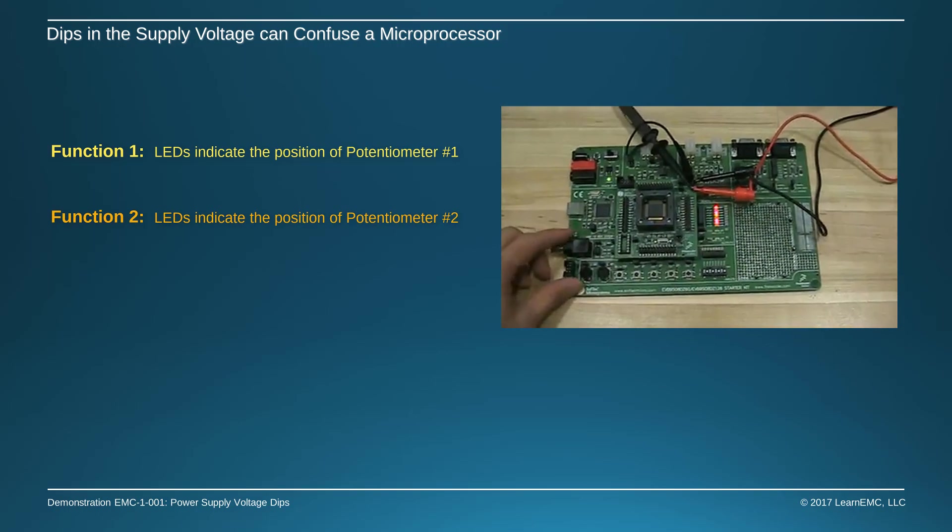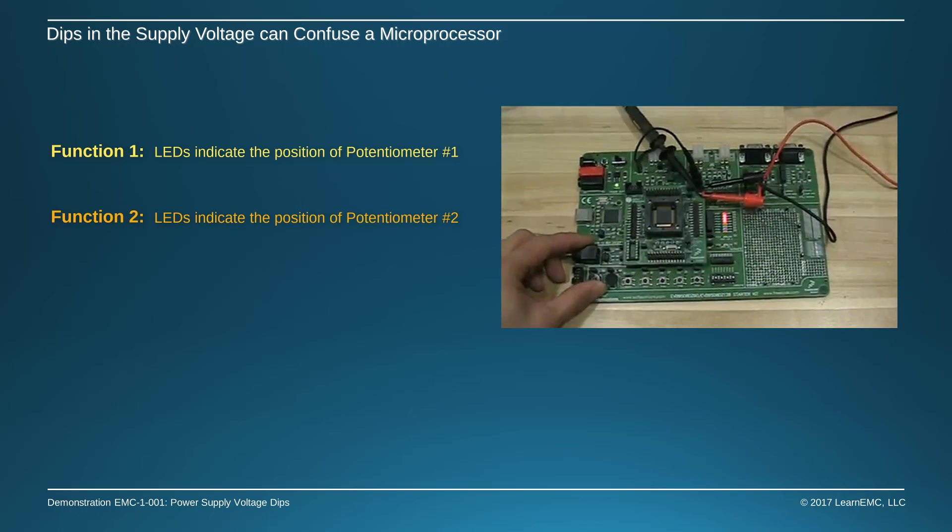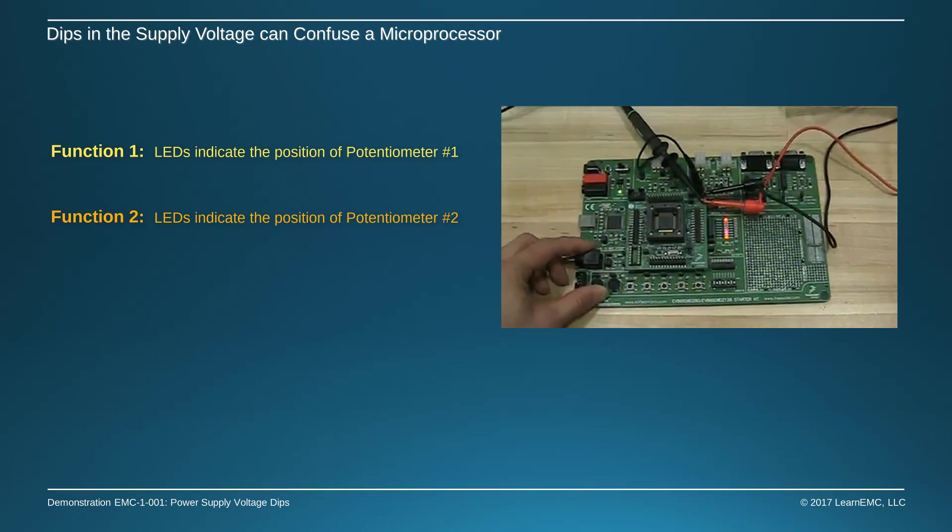Pressing button number 2 causes the lights to indicate the position of a potentiometer to the left of the first one.